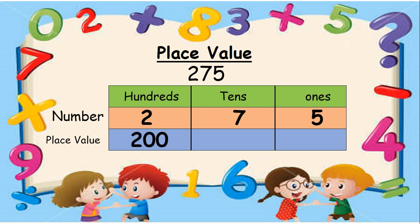As the number 7 is in the 10s column, it means that there are 7 tens, so its place value is 70. As the number 5 is in the 1s column, it means that there are 5 ones, so its place value is 5.